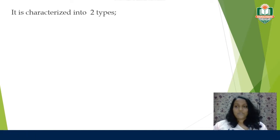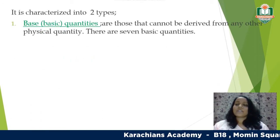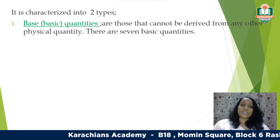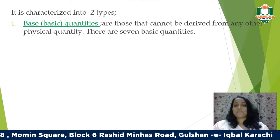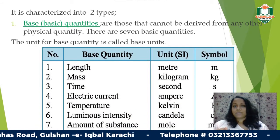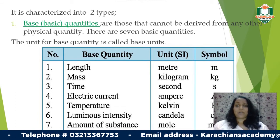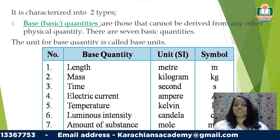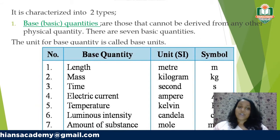Physical quantities are divided into two parts. The first is base quantities — these are the basic quantities that cannot be derived from any other physical quantities. There are seven base quantities shown in the table: length, mass, time, electric current, temperature, luminous intensity, and amount of substance. Their units and symbols are also provided in the table.